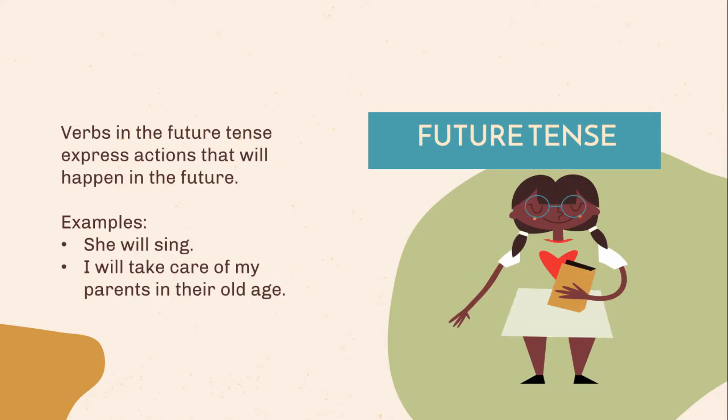Future tense. Verbs in the future tense express actions that will happen in the future. Examples: She will sing. I will take care of my parents in their old age.